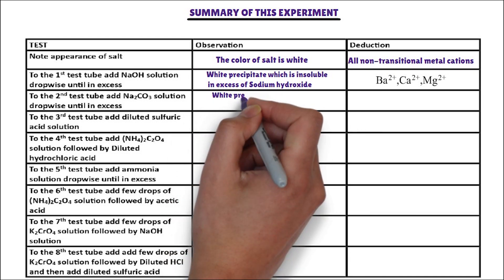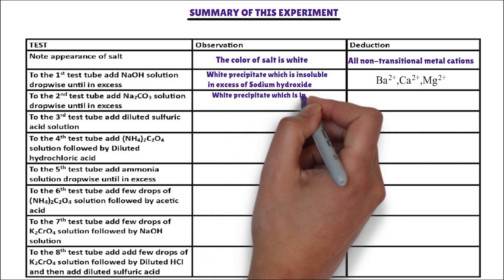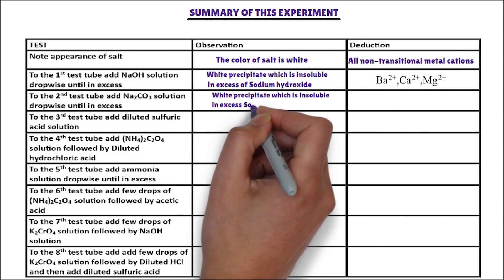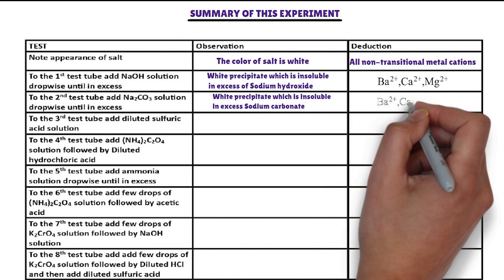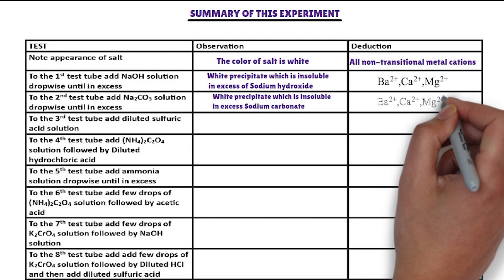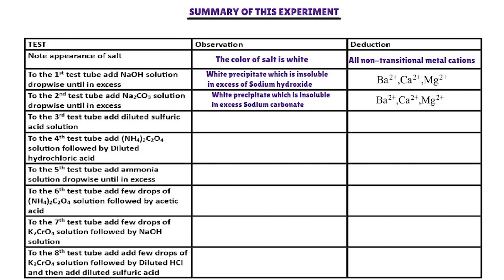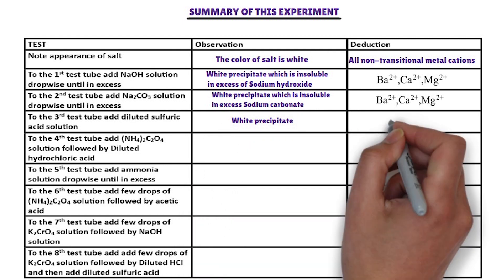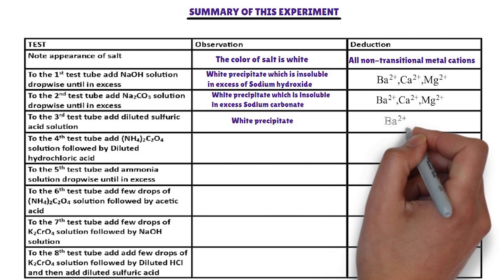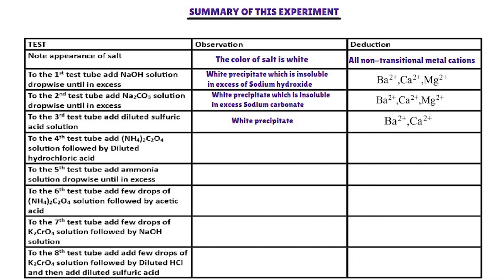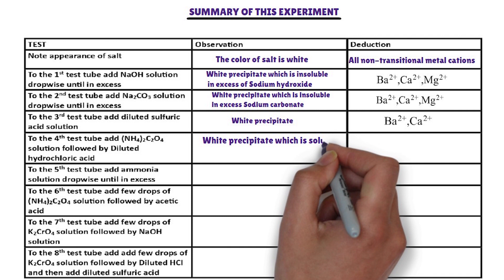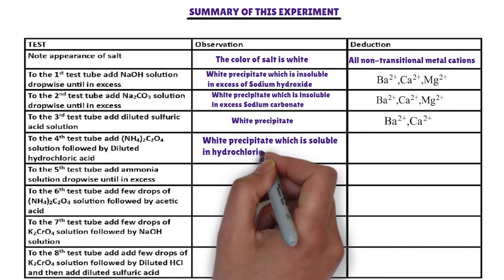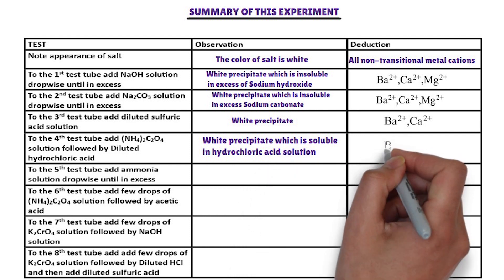In the second test tube, sodium carbonate solution is added. The cations that form a white precipitate with sodium carbonate that is insoluble in excess are magnesium ion, calcium ion, and barium ion. In the third test tube, diluted sulfuric acid is added. The cations that form a white precipitate with diluted sulfuric acid are calcium ion and barium ion. In the fourth test tube, ammonium oxalate solution is added. The cations that form a white precipitate with ammonium oxalate that is soluble in hydrochloric acid are calcium ion and barium ion.